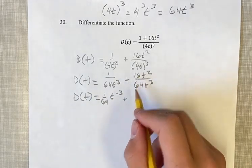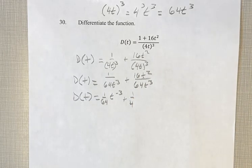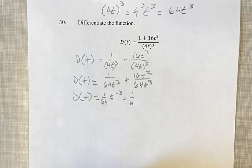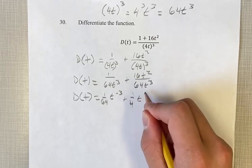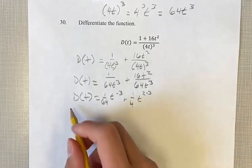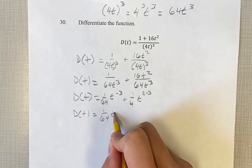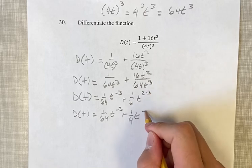Over here, we have 16 over 64, so that's 1 fourth since 64 is 16 times 4. And then we have t squared over t cubed. If you're dividing exponents, you can subtract them. So this is t to the 2 minus 3. We can simplify to 1 over 64 t to the negative 3 plus 1 fourth t to the negative 1.